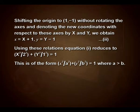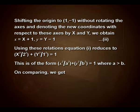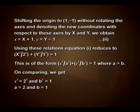Using these relations, equation 1 reduces to X² upon 2² plus Y² upon 1² equals 1. This is of the form x² upon a² plus y² upon b² equals 1, where a is greater than b. On comparing, we get a² equals 4 and b² equals 1, which gives us a equals 2 and b equals 1.